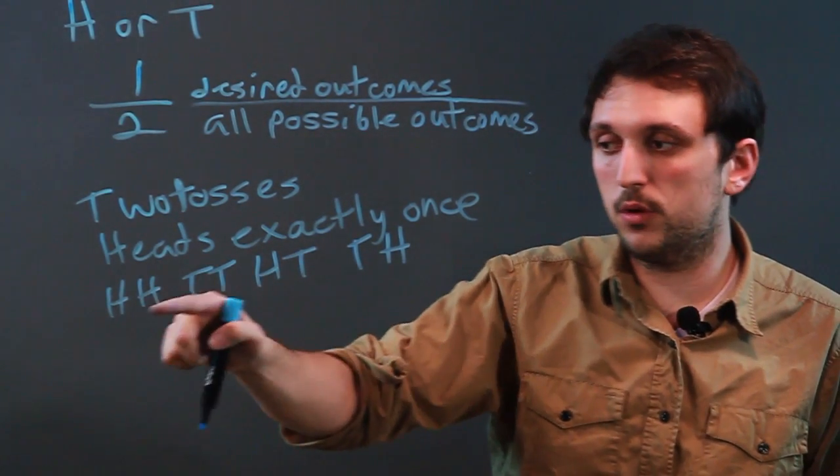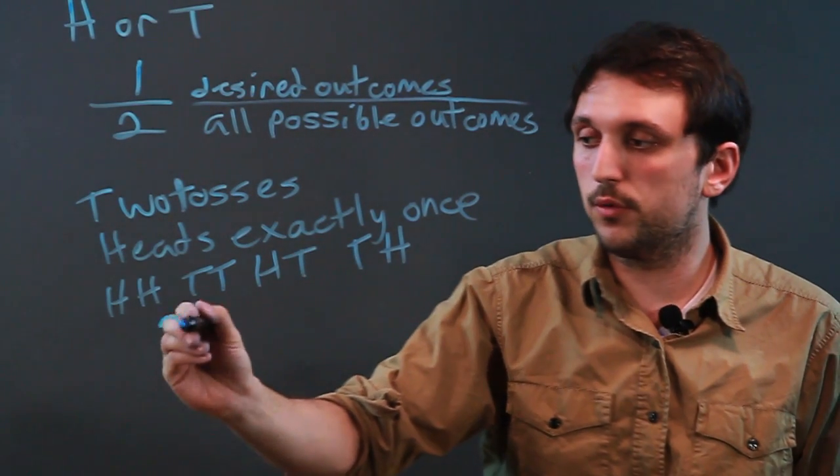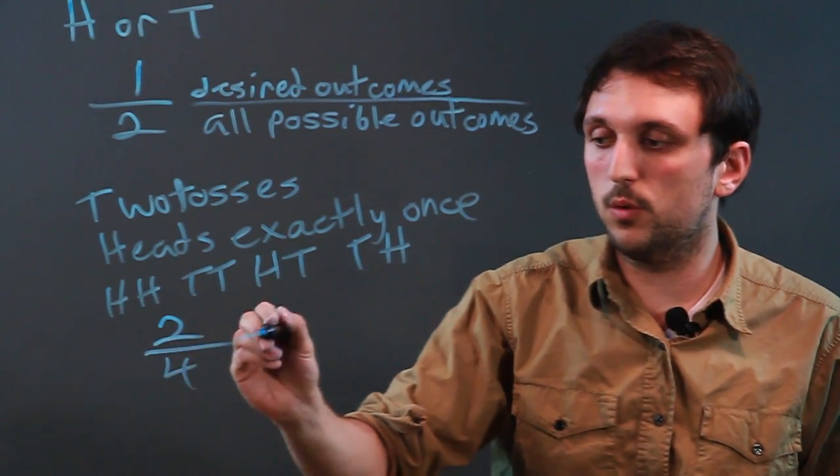So there's two out of one, two, three, four. So it's two fourths or one half.